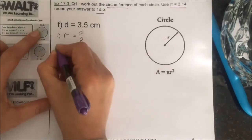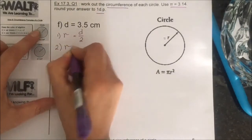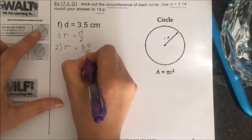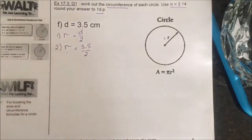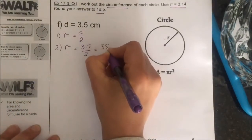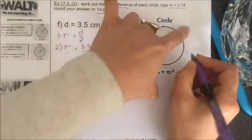Which means, if we substitute d, it's going to be 3.5 divided by 2. Get rid of the decimal when you are dividing, so it's going to be 35 over 20. Apply long division on the side.